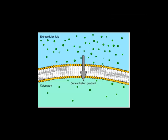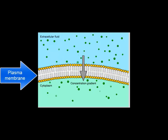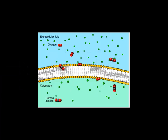Diffusion across a semi-permeable membrane, like the plasma membrane, is called passive transport and requires no ATP energy. Oxygen and carbon dioxide move into and out of the cell by passive transport.